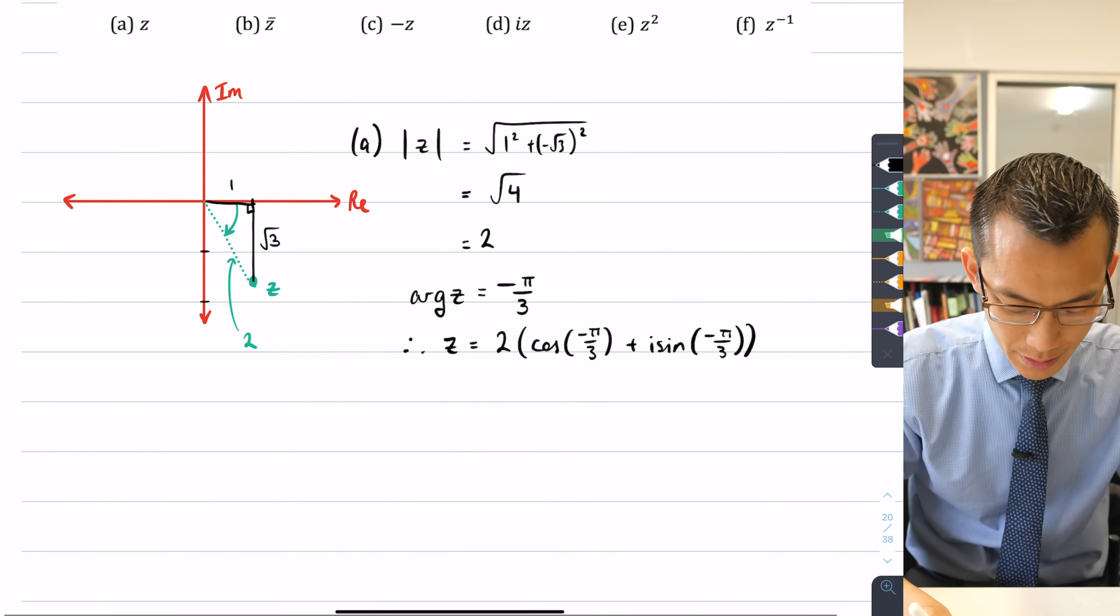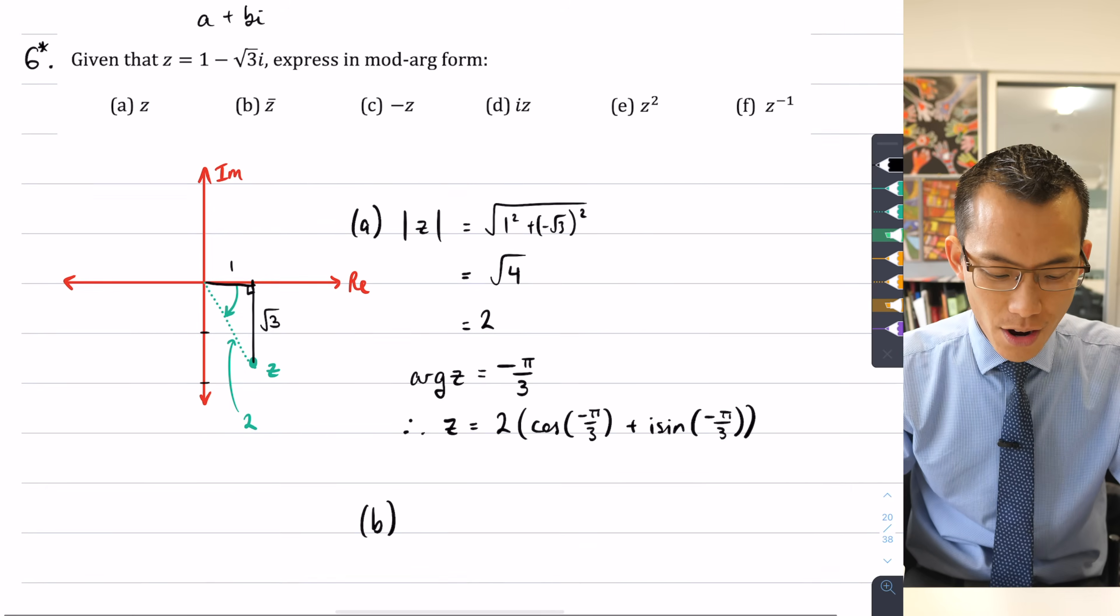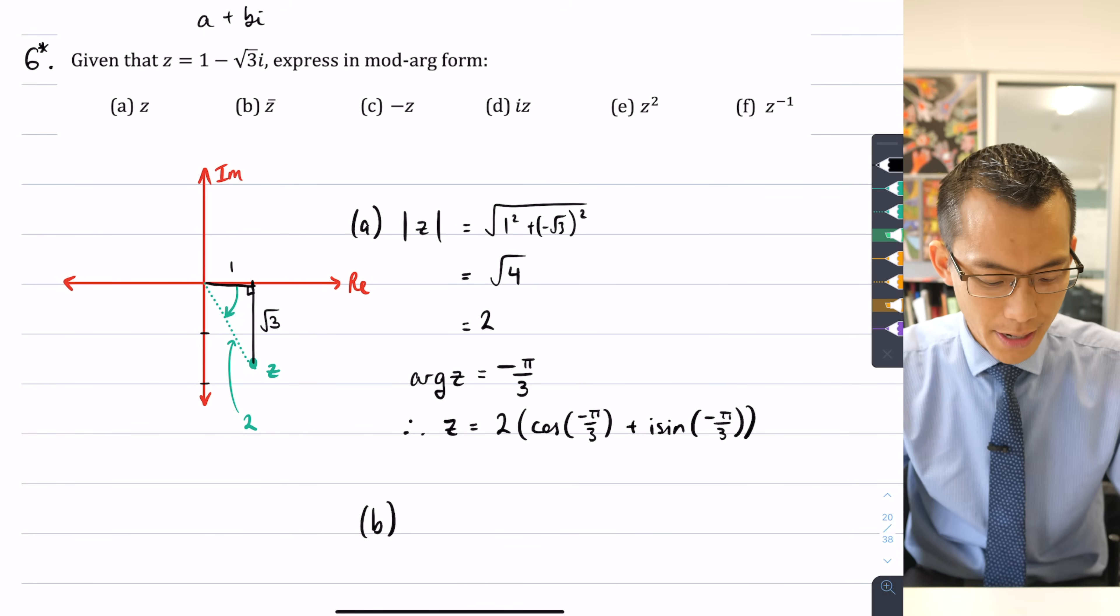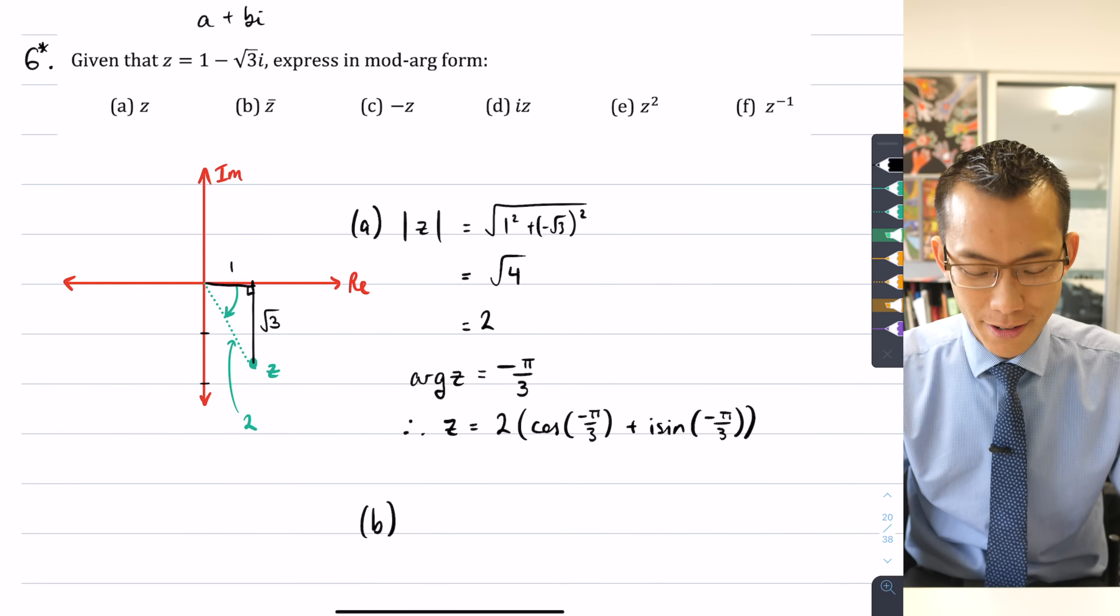We'll continue right here. All right, now I want z̄. This is the conjugate of z. Now, before I start thinking about calculating all my different things, my modulus, my argument, all that,